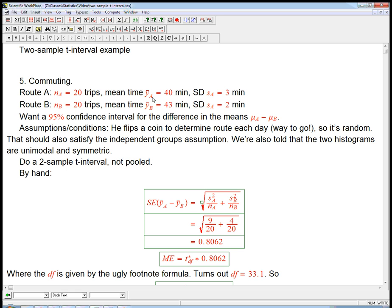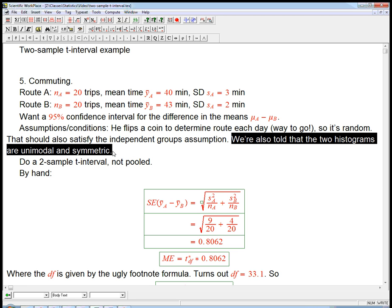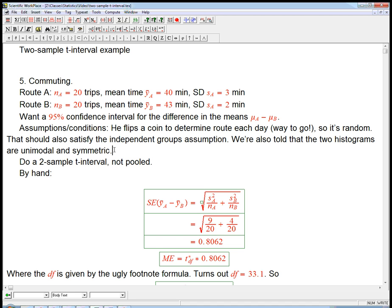It shouldn't be that just because he had a really good day on route A on one day, then he's going to have a really good day the next day, especially if he's randomizing which route he's taking. So that's good. It's also very important is in the problem we're told that if you actually do the histograms, if you do the histograms of these times, the individual times, they look unimodal and symmetric. Now notice the n's are about 20 and total 40, but the individual n's are 20. And so we do need to really know that they don't look too skewed or too bimodal or anything like that, but we're assured that that's okay.